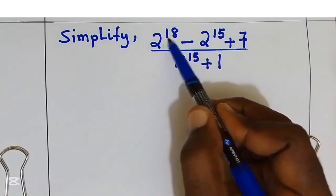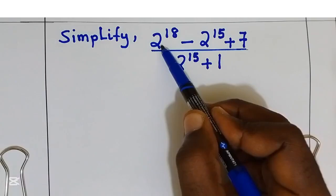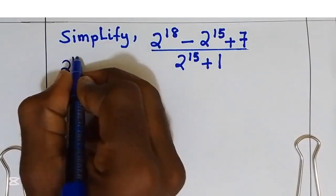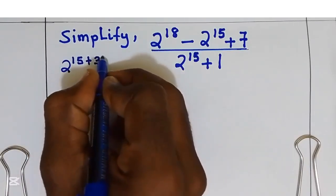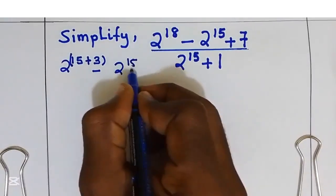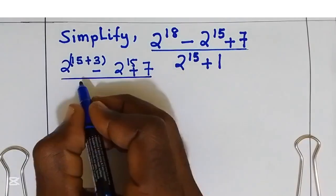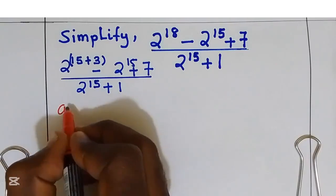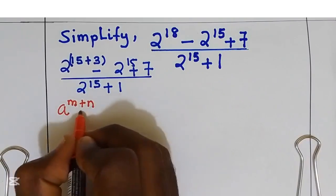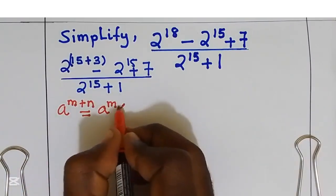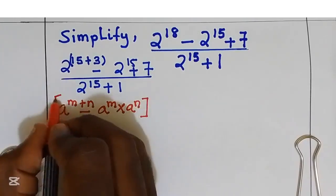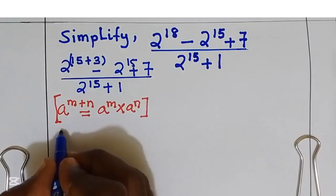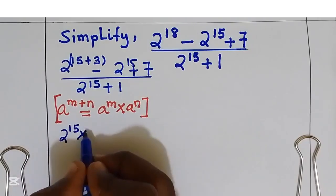I will start by splitting 2 power 18 into 2 power 15 multiplied by 2 power 3. Now, 2 power 18 is the same as 2 power 15 plus 3. Using the exponential rule that a power m plus n equals a power m multiplied by a power n, we split 2 power 15 plus 3 into 2 power 15 multiplied by 2 power 3.